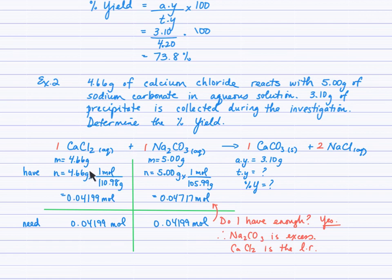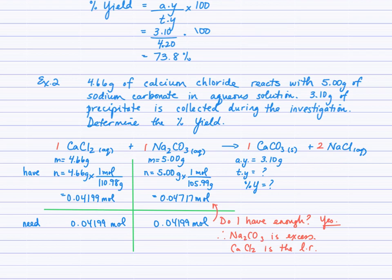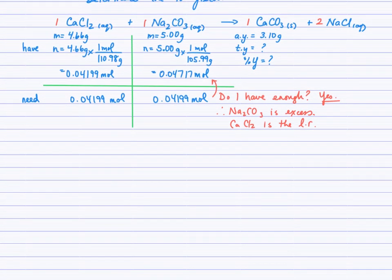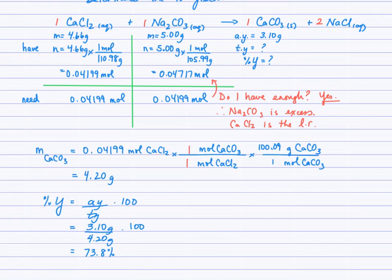I first converted the given masses to moles. The ratio is 1:1, so having 0.04199 mol of calcium chloride means I need the same amount of sodium carbonate. I have enough — in fact, I have extra. So sodium carbonate is present in excess, making calcium chloride the limiting reagent. Using the mole ratio from calcium chloride to calcium carbonate and the molar mass of calcium carbonate, the theoretical yield is 4.20 g. With the actual yield and theoretical yield in the formula, the result is 73.8%.